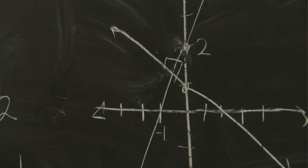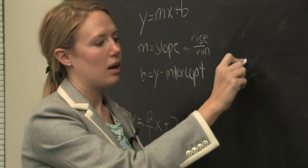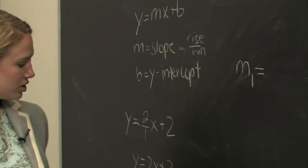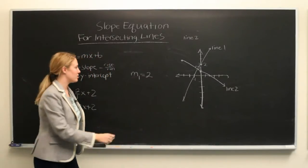since we're told that these lines are intersecting at 90 degrees, we use the equation that the slope of line one, which is equal to 2, is going to tell us the slope of line two,